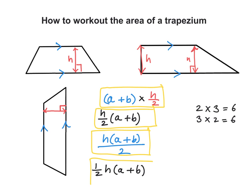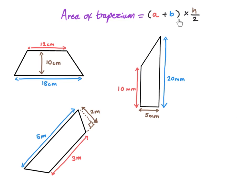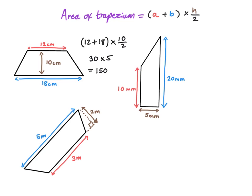Let's use the formula to work out the area of these trapeziums. Starting with the first one: the parallel sides are 12 cm and 18 cm. So the sum of the parallel sides is 12 plus 18. Then I multiply by half of the height. The height of this trapezium is 10 cm, so I multiply by half of 10. Simplifying: 12 plus 18 is 30, and 10 divided by 2 is 5. So 30 times 5 equals 150 cm squared.